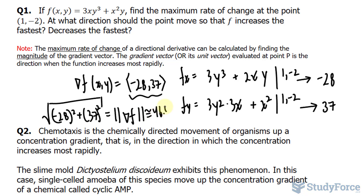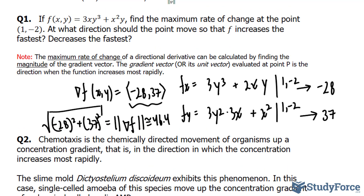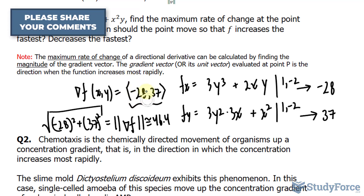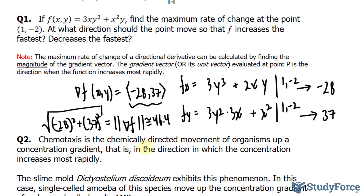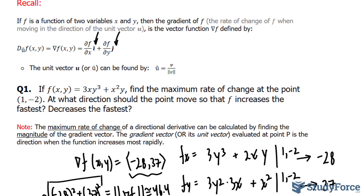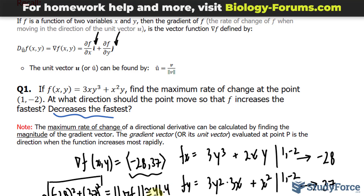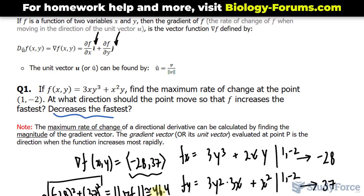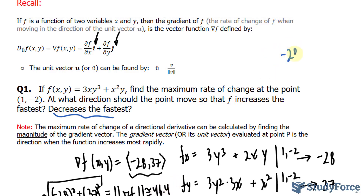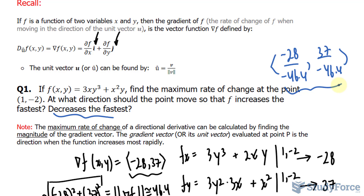Approximately 46.4. They're also asking for the direction in which the function increases the fastest. For that, you can simply report the gradient vector (-28, 37), or find the unit vector by dividing each component by 46.4. The unit vector is found by taking the vector's components and dividing by the magnitude. For the direction of fastest decrease, use the negative version: divide -28 by -46.4 and 37 by -46.4. This represents the vector where the function is decreasing the fastest.